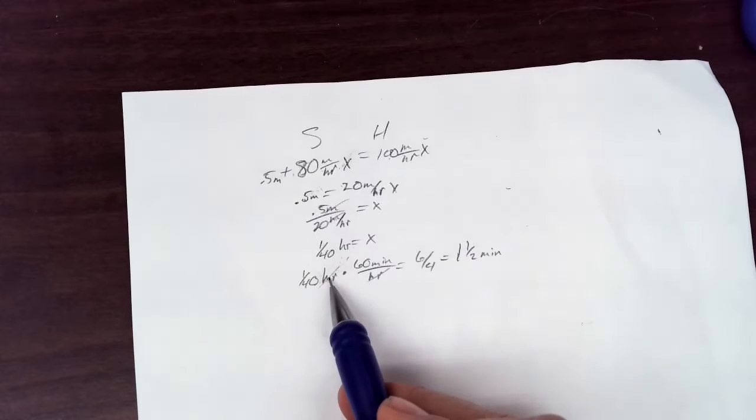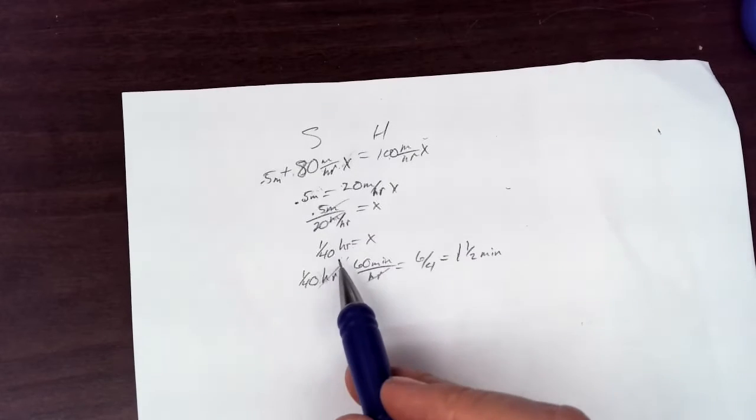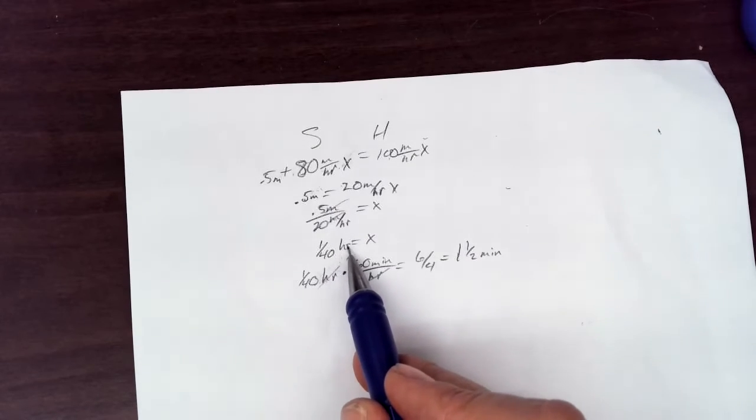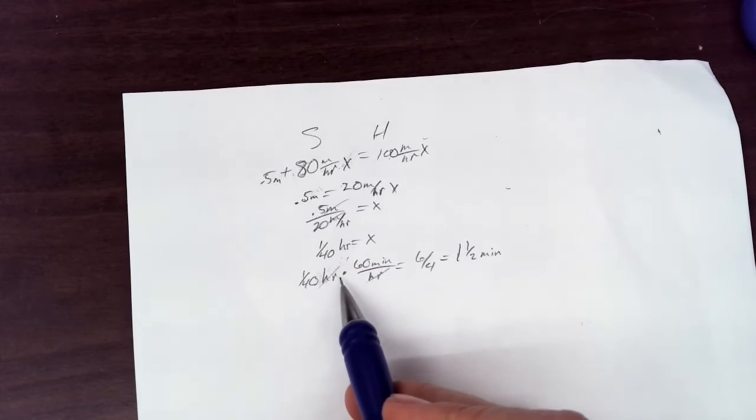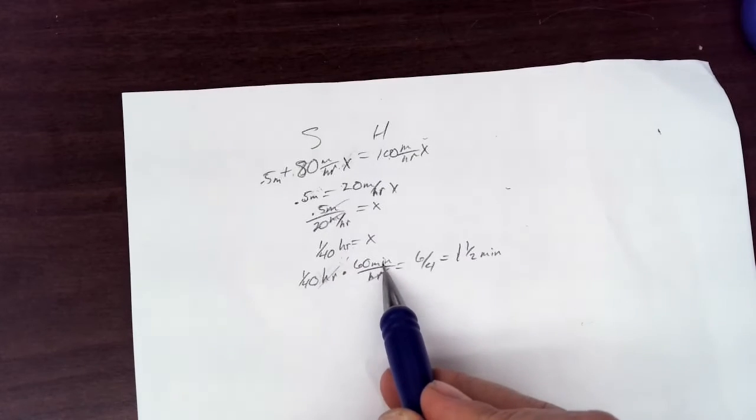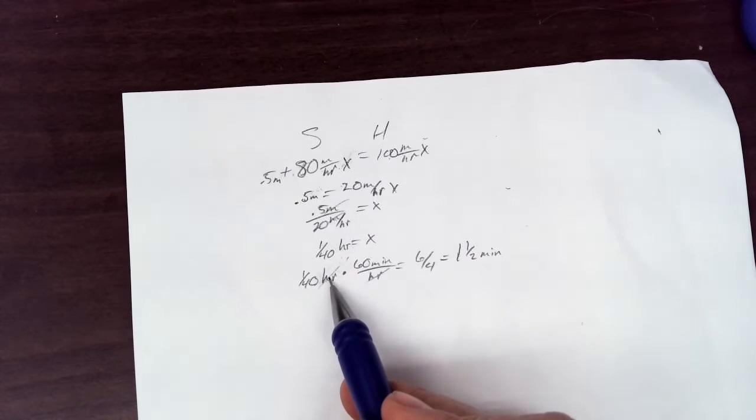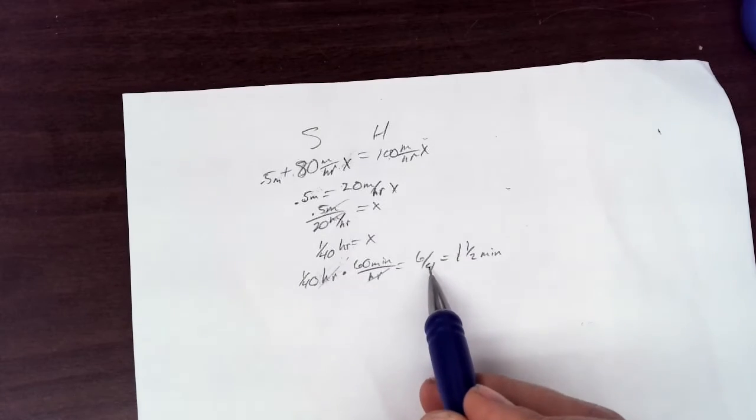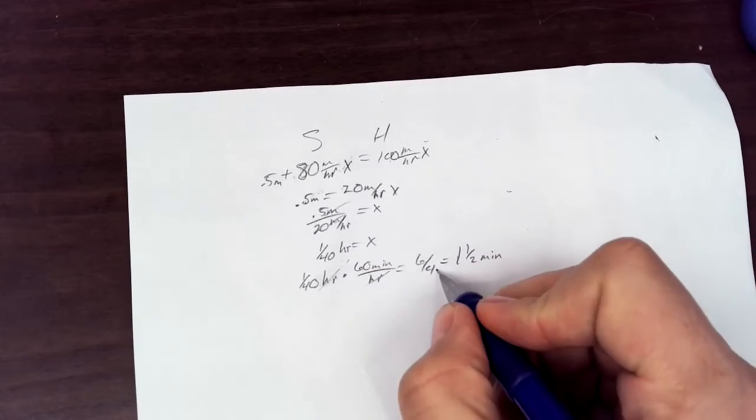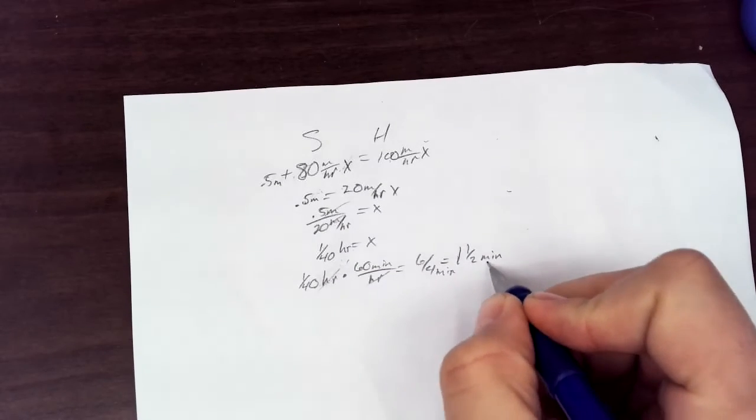60 minutes per hour. Remember that the hours is not actually in the denominator anymore. It's the total unit in the numerator, essentially. So when I do 60 minutes per hour, it is true that this hours on the bottom cancels that hours. It is not on the bottom of a fraction. It is on the top, which is 6 over 4 minutes, which is 1 1/2 minutes.